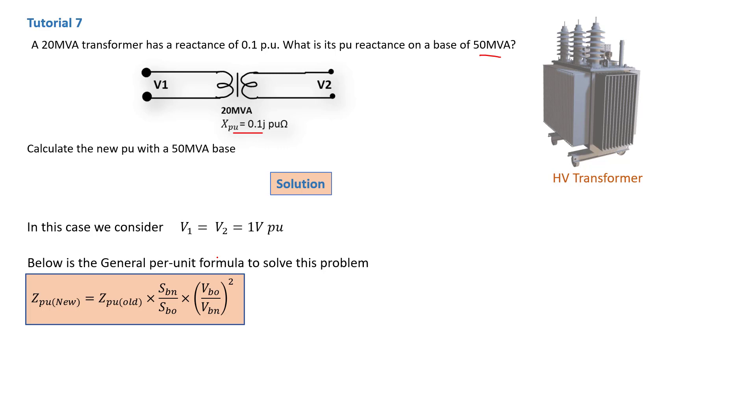So below is the general formula. As you can see, Z per unit new will be equal to Z per unit old. Now Z per unit old, that is 0.1j that is given to us. SBN, that's SB new, and that will be the 50 MVA. And SB old, that is 20 MVA.